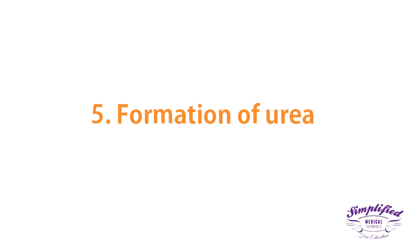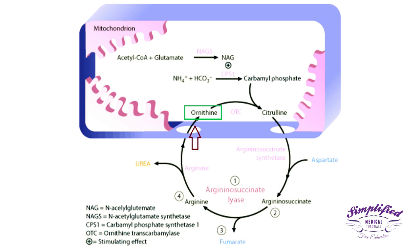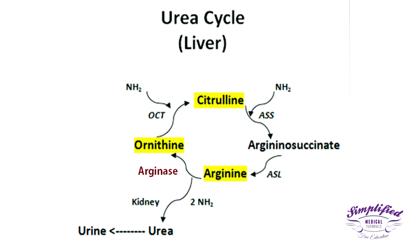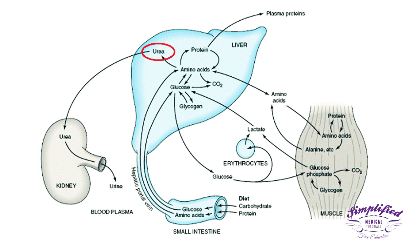The fifth and final step is the formation of urea. The enzyme arginase cleaves arginine to ornithine and urea. Ornithine is transported back into the mitochondrion in exchange for citrulline, where it can be used for another round of the cycle. This last step occurs almost exclusively in the liver because arginase is present primarily there. While other tissues such as the kidney can synthesize arginine, only the liver can cleave arginine and thereby synthesize urea.